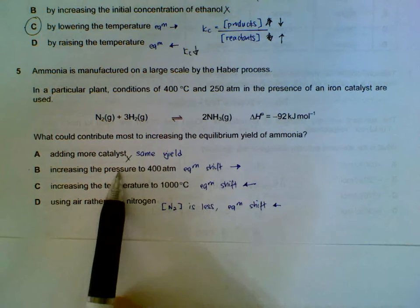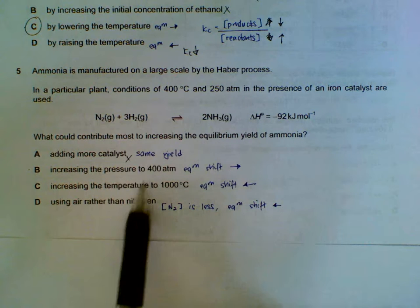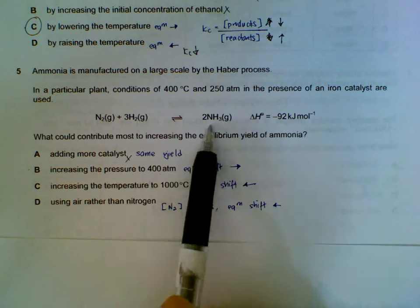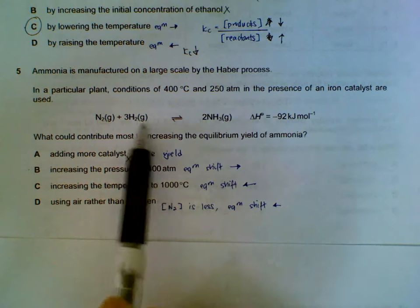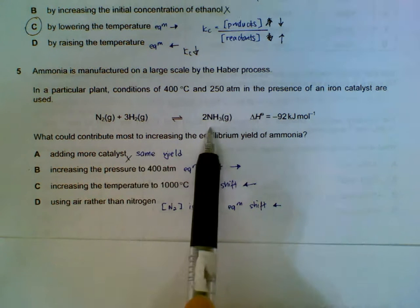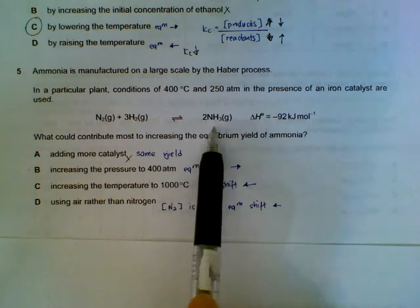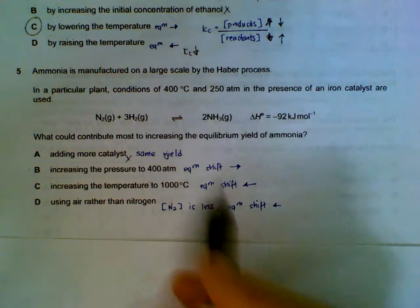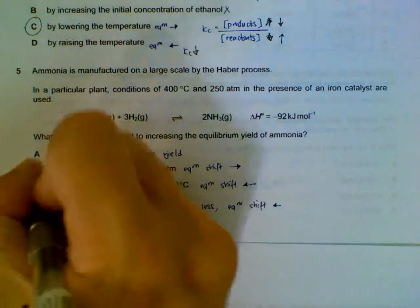Increasing the pressure. This is the answer. Why does increase the pressure give us increased yield? Because the equilibrium will shift towards the side that has less gas molecules to reduce the pressure. So they will shift to the right side. And we will get more yield of ammonia.